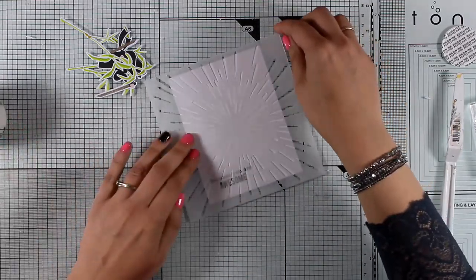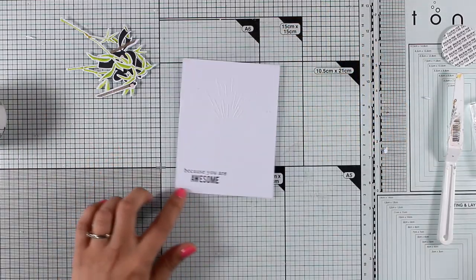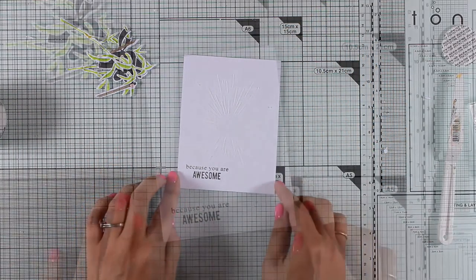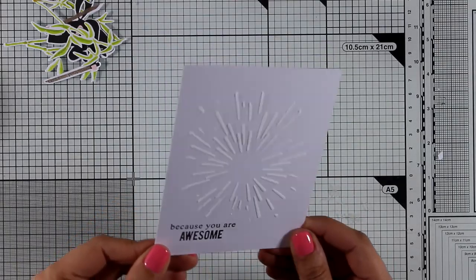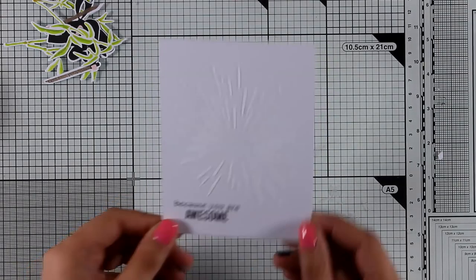And now let's peel off the stencil and see how the background is looking. I really love the white-on-white texture and I think it provides the perfect background for my ninja.